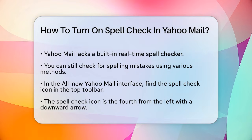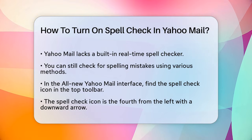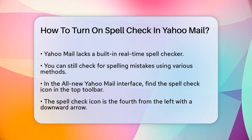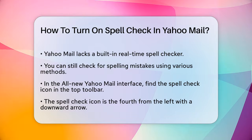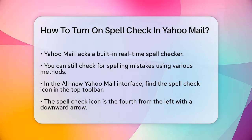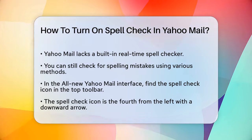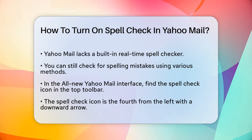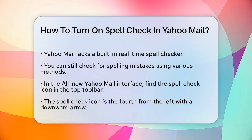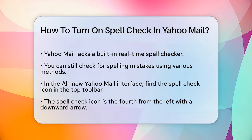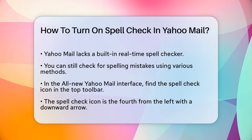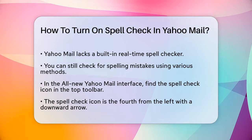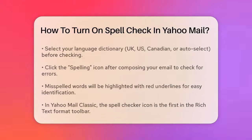Using Yahoo Mail's built-in spellcheck: In the all-new Yahoo Mail interface, you can find the spellcheck icon in the top toolbar just under the tabs. It's the fourth icon from the left and has a small downward arrow. Click on this arrow to select the language dictionary you're using. You have options for English in UK, US, and Canadian, as well as an auto-select option.